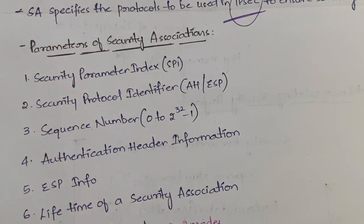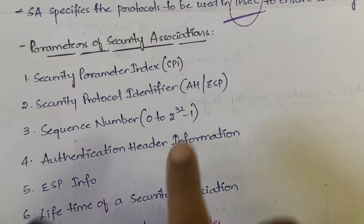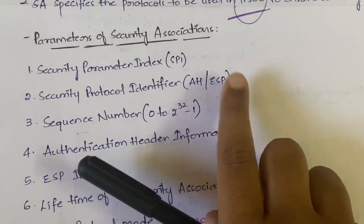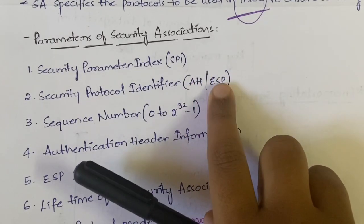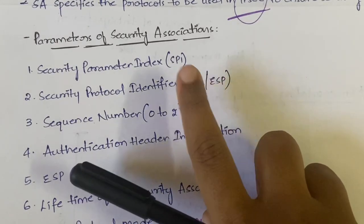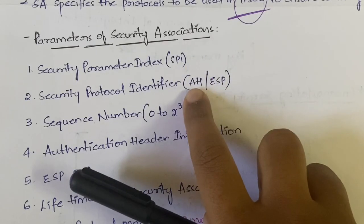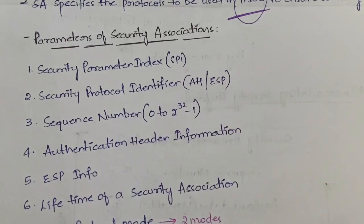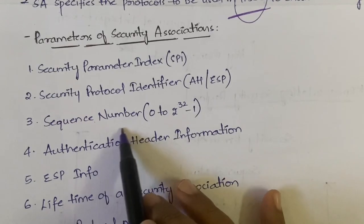Next we have the Security Protocol Identifier. In IP security we have two protocols: the Authentication Header and the Encapsulating Security Payload. Among these two protocols, which one is being used in that particular security association — that is what the security protocol identifier specifies.